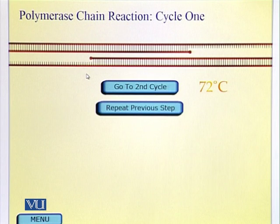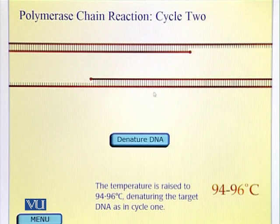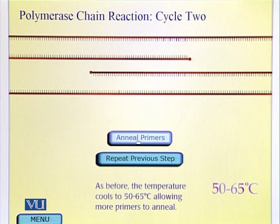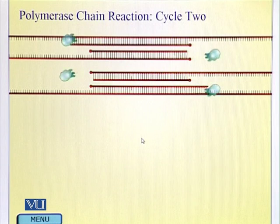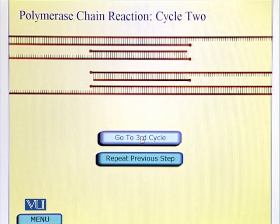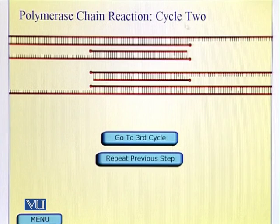In the next stage we will again repeat the cycle. We denature, the primers anneal, we extend the primers, and here the primers have been extended. Please note in two PCR reactions we have gone from one DNA strand to four DNA strands. However, thus far we haven't specifically isolated or amplified just the fragment of DNA that we want to. This is cycle number two.